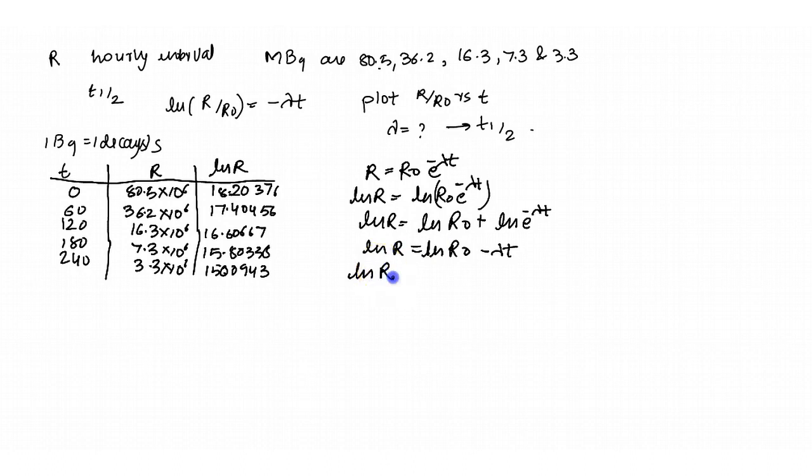ln of R0 e to the power minus lambda t. This will become ln of R by R0 is minus lambda t. This is proved.